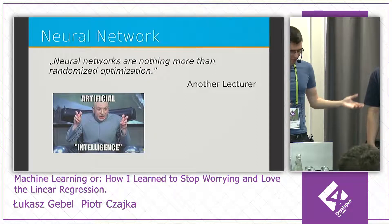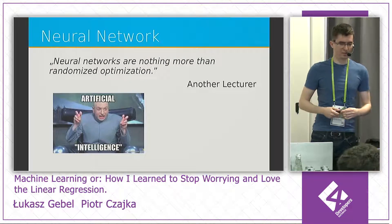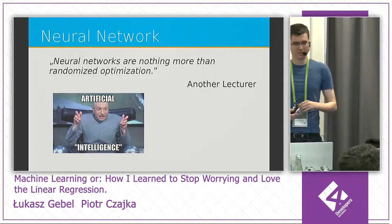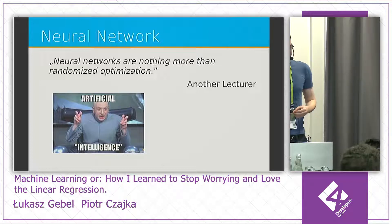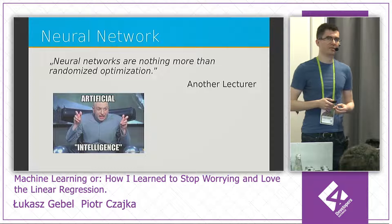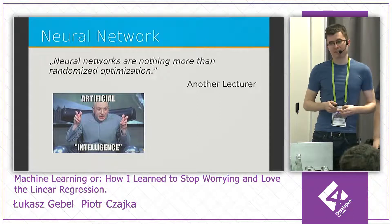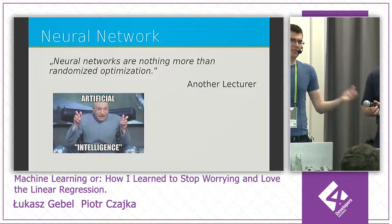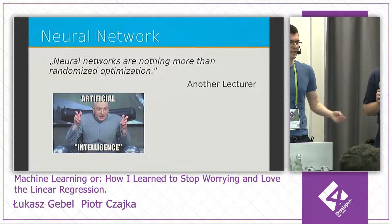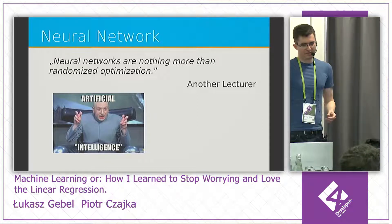Looking at the network diagram: yellow neurons are input neurons that pass your examples to the blue hidden layer, which uses the sigmoid function. The hidden layer's output connects to the red output layer, which gives the final output of the neural network. The green neurons are called bias — they give the network some freedom while fitting to the solution space, helping choose the proper way to go through your examples. When we finally understood how this algorithm works, we were very proud — but our lecturer reminded us that neural network training is essentially nothing more than randomized optimization.